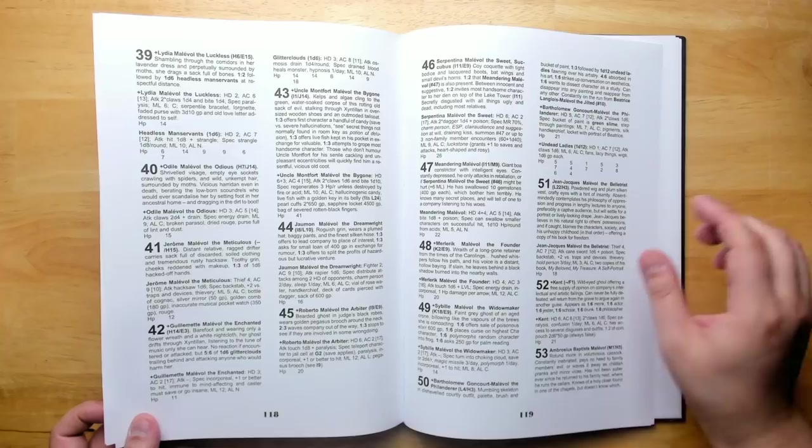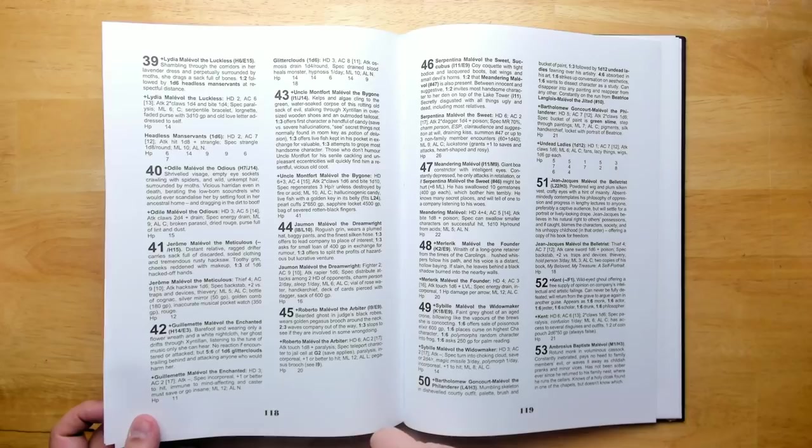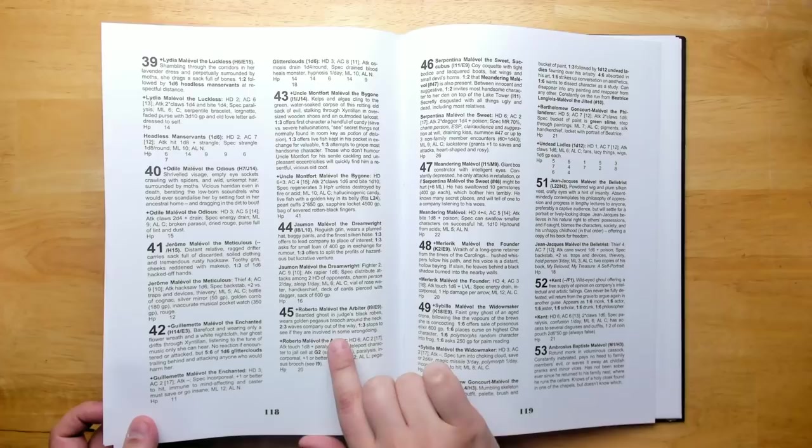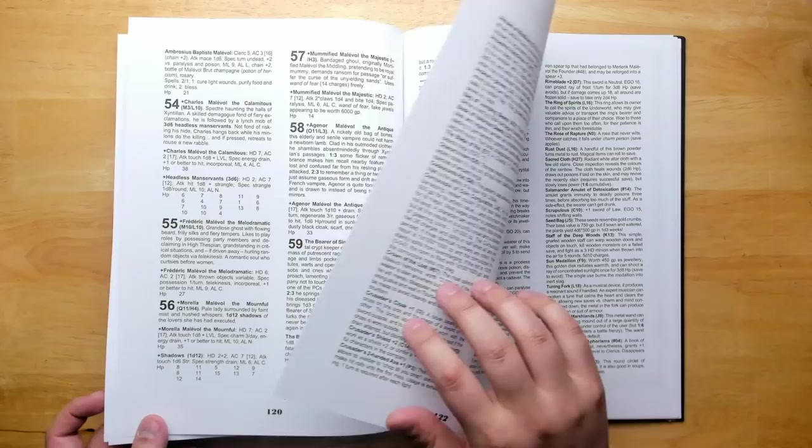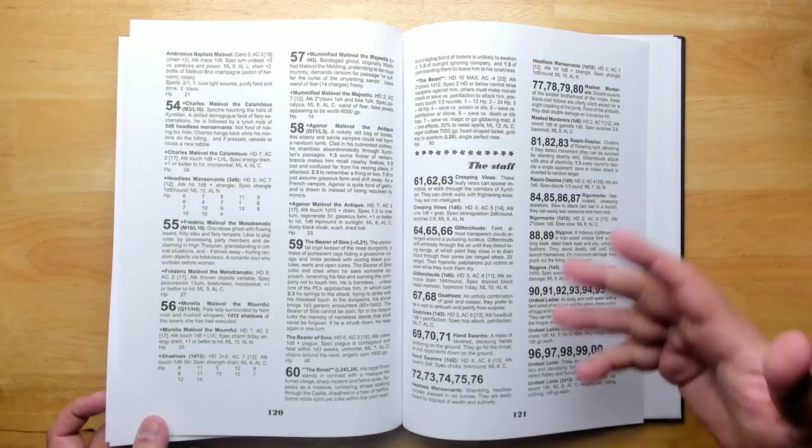Let's pick one at random here. Roberto Malivol, the Arbiter, a bearded ghost in judges black robes, wears golden pegasus brooch around the neck. Two in three waves company out of the way. One in three stops to see if they're involved in some wrongdoing. That's great. Just a little encounter, right? So you can just watch this regal ghost float by or he might stop and interrogate you.